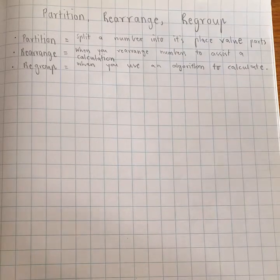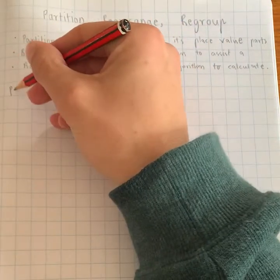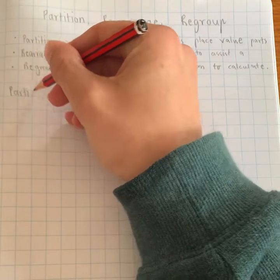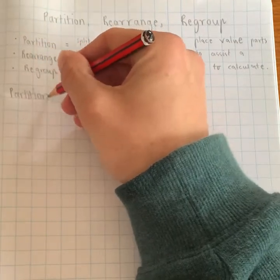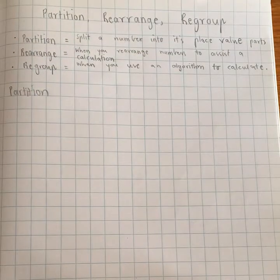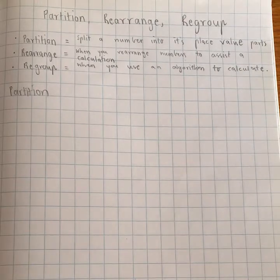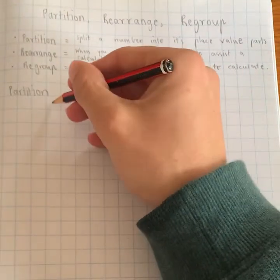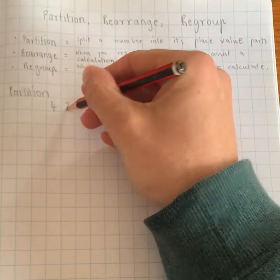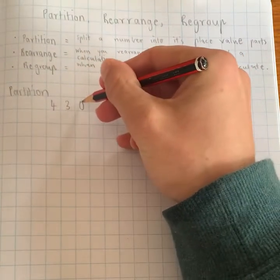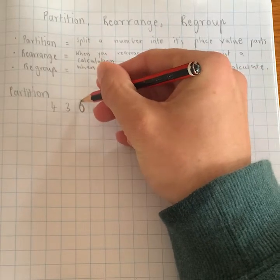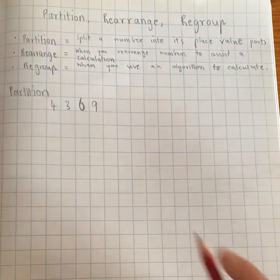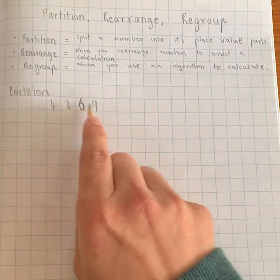So the first one is to partition. So I'm just going to write partition here. So what partition is, is it's about breaking the number into its place value parts. So I'm going to give you a random number in its thousands, I might change that to a six. So we've got 4,369.